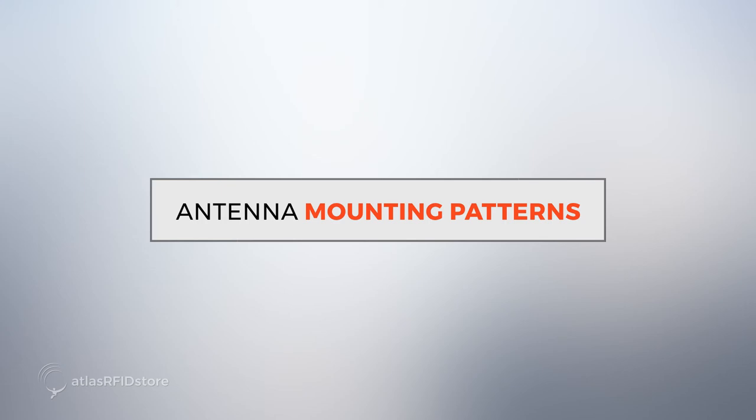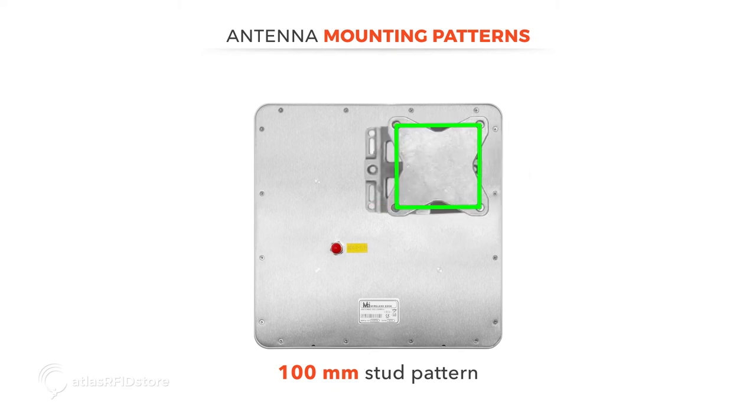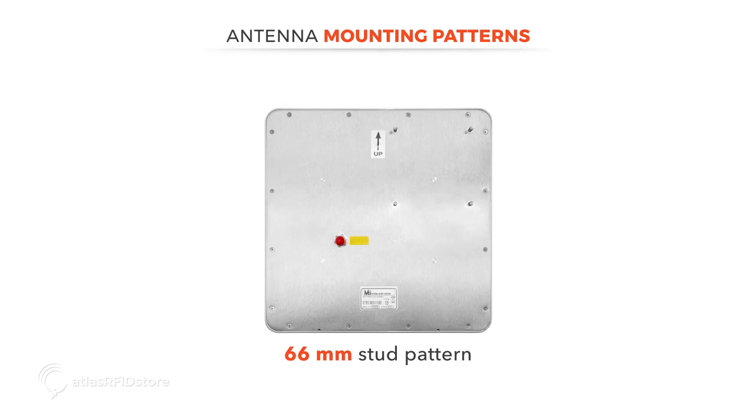Now, we'll take a look at each of the plates on the backside of some antennas, so you can see some different mounting patterns. For example, this is an antenna with a 100mm stud pattern, and this mounting bracket was designed specifically to fit that arrangement. This antenna has a 66mm stud pattern, and this mounting bracket was designed specifically to fit that arrangement.